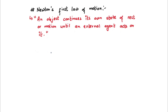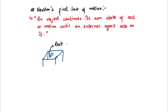So what this means is that, let's say we have a table, and let's say you have a book or a pen or something here. Let's say we have a pen here. So what Newton says is that this pen or this pencil is at rest, and it's always going to be at rest. Unless an external agent acts on it.